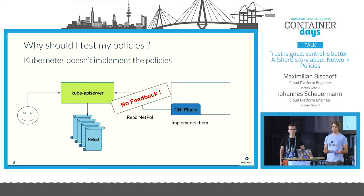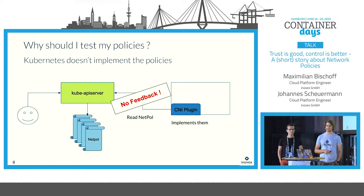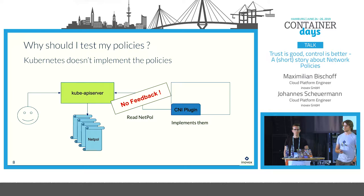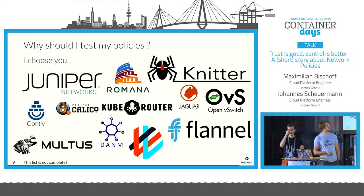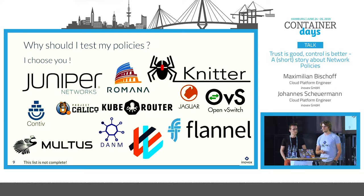The same applies with more complex network policies — it's hard to know what is actually supported by the CNI plugin. If a CNI plugin says it supports network policies, does that mean all variations, or only some basic ones? There are a ton of CNI plugins; some are better documented, some are not. It's pretty hard to predict which of all these tools implement network policies correctly.